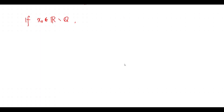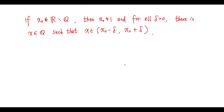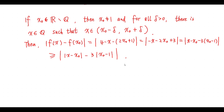Now consider the case where x0 is an irrational number. Then for any positive number delta, there is a rational number x such that x is in this open interval. We have this inequality. We choose delta equals this number, which is greater than 0.